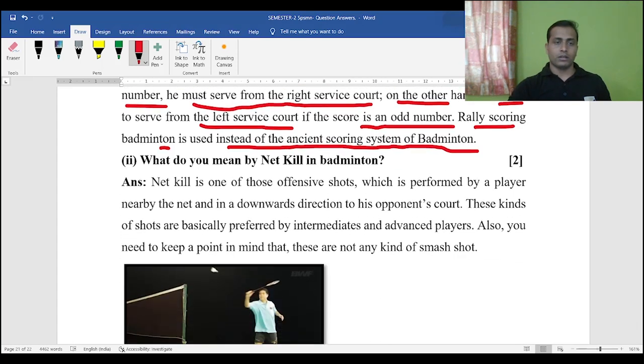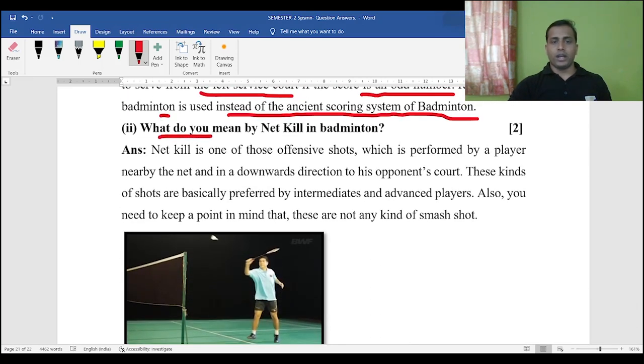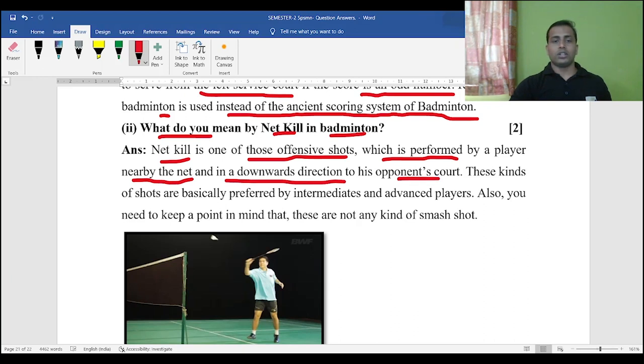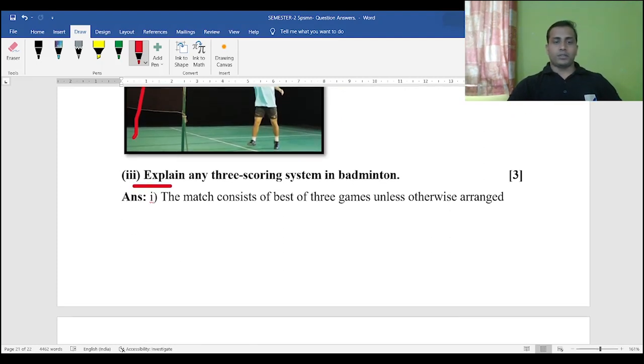Next question: What do you mean by net kill in badminton? Very important question. Net kill is one of those offensive shots which is performed by a player nearby the net and in a downwards direction to his opponent's court. As you can see in this picture, that particular player is giving a net kill shot. That means this particular shuttle will just drop near this particular area so that it will be very difficult for the opponents to take this shot. These kinds of shots are basically performed by intermediate and advanced players. You need to keep in mind that these are not any kind of smash shot. It is not at all a smash.